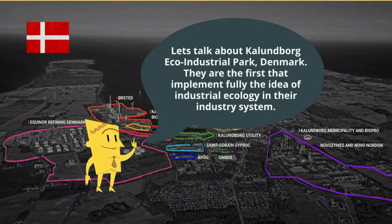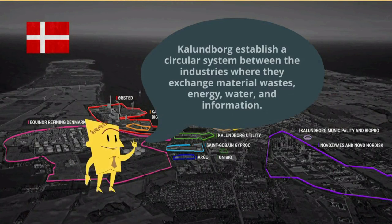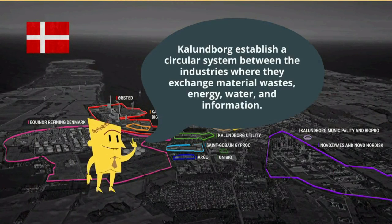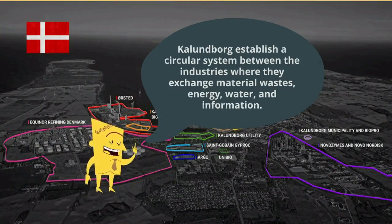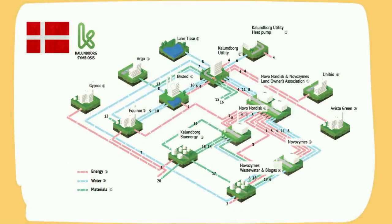Kalundborg was the first to fully implement the idea of industrial symbiosis in their system. Kalundborg established a circular system between their industries where they exchange material, waste, energy, water, and information.